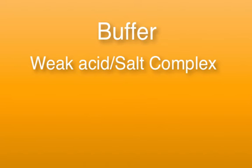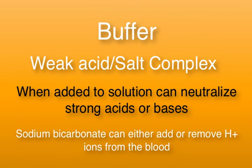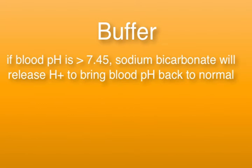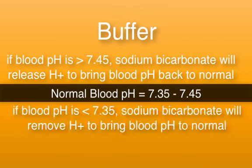A buffer is a weak acid salt compound. When added to a solution, buffers neutralize either strong acids or strong bases. Sodium bicarbonate is a very important buffer in the body. Sodium bicarbonate can either remove hydrogen ions or release hydrogen ions in body fluids. In other words, if the pH of blood rises above 7.45, then sodium bicarbonate will release hydrogen ions to bring the pH back down to 7.35 to 7.45, its normal range. In contrast, if the pH of blood becomes lower than 7.35, then sodium bicarbonate will bind to hydrogen ions to remove them from the solution and bring the pH back up to 7.35 to 7.45.